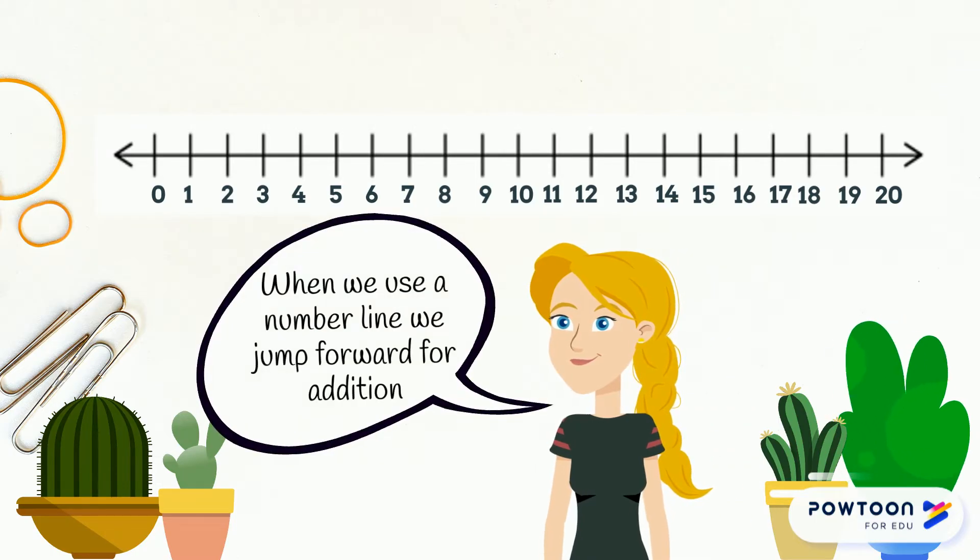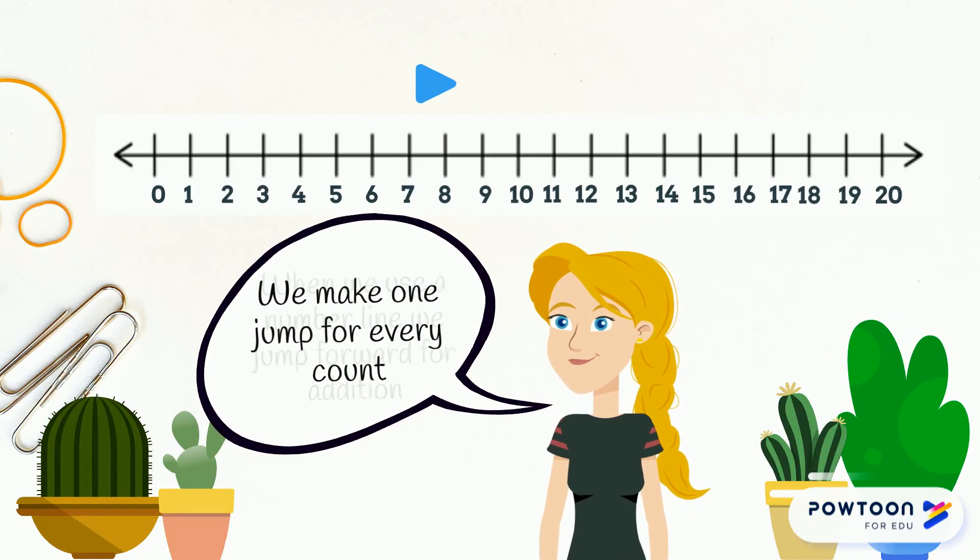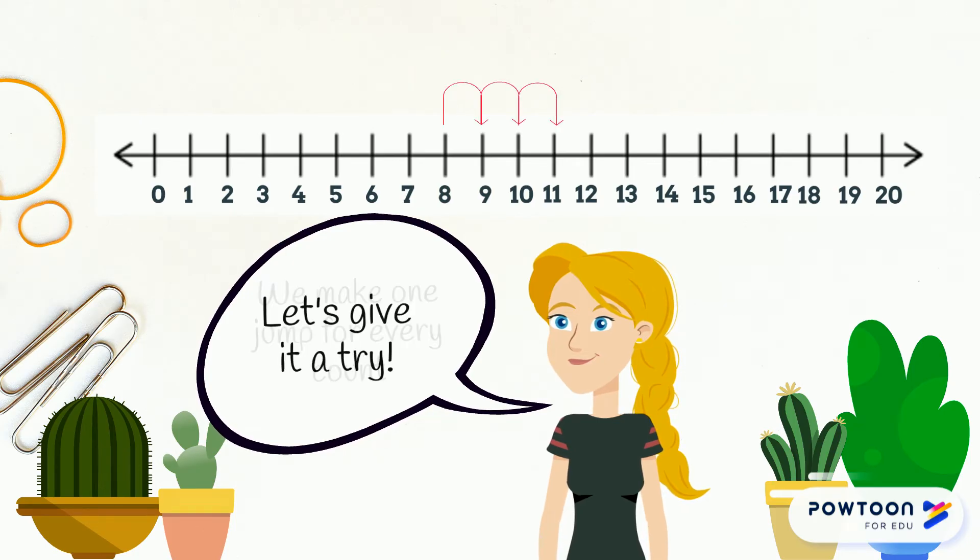When we use the number line we jump forward for addition. We make one jump for every count. Let's give it a try.